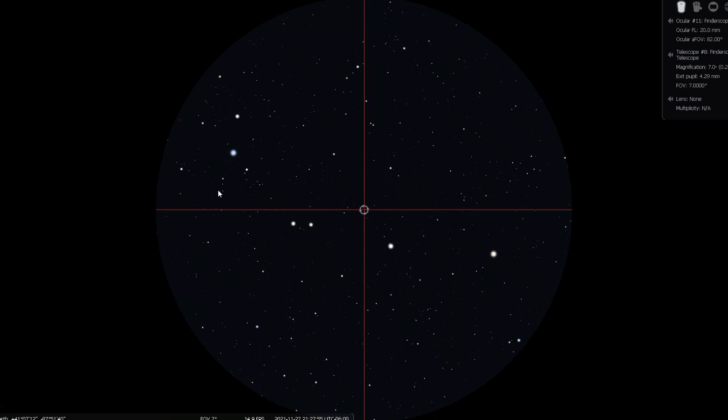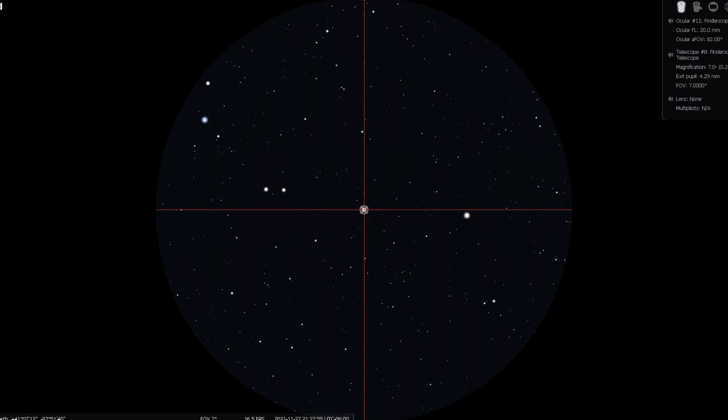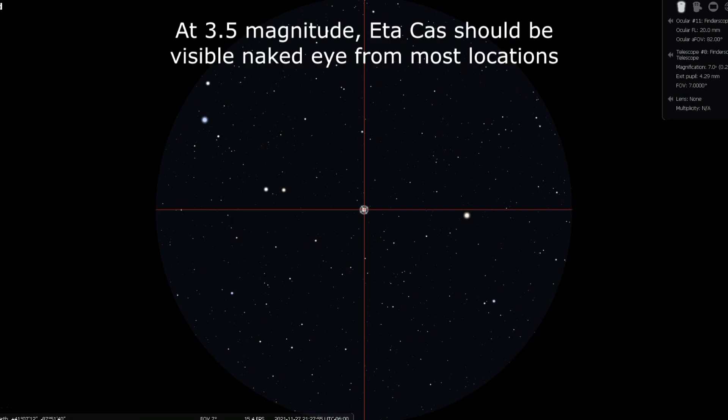Hopefully, if your finder is good quality and skies are dark enough, you will notice 3 other, not quite as bright stars between them. Two are somewhat dimmer and closer together, but we want to center the brighter star. That is Eta Cassiopeiae. If not, use the next method I will describe.